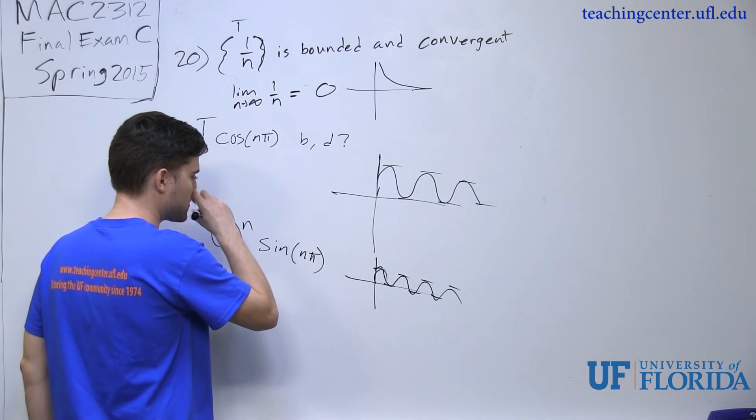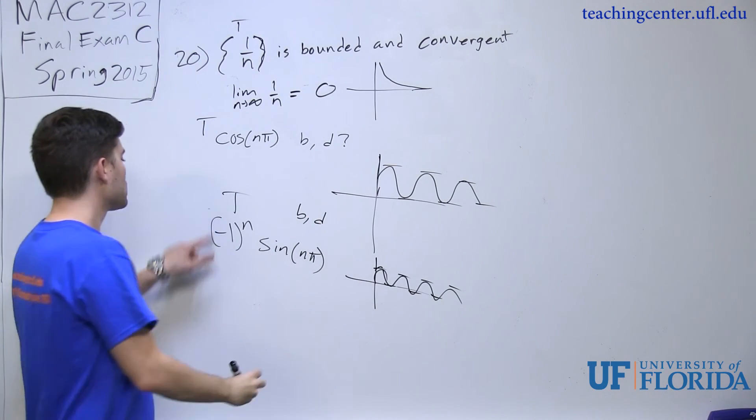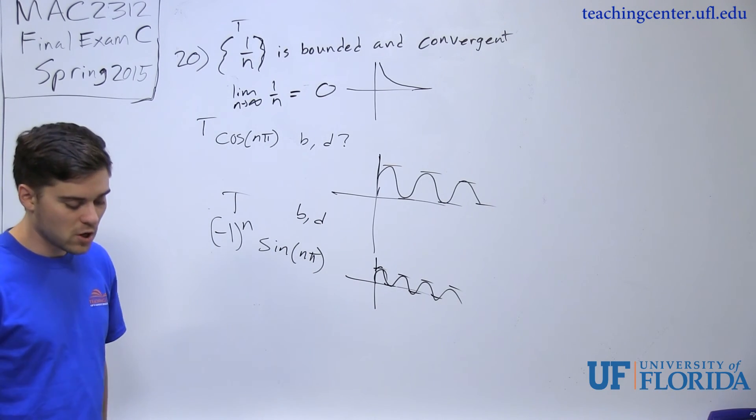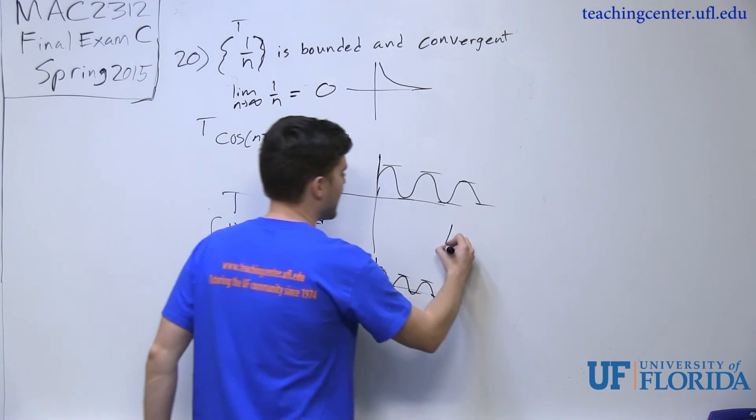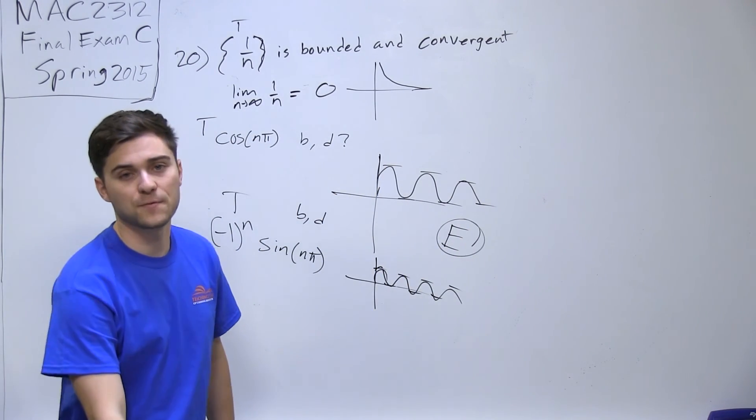And it is divergent because it never comes out to one finite value. Even though it looks like it comes out to zero, it never comes out to one finite value. So this is bounded and divergent. So this third statement is also true. So when we look at the final answers, letter E stating that all three of them are true is the correct answer.